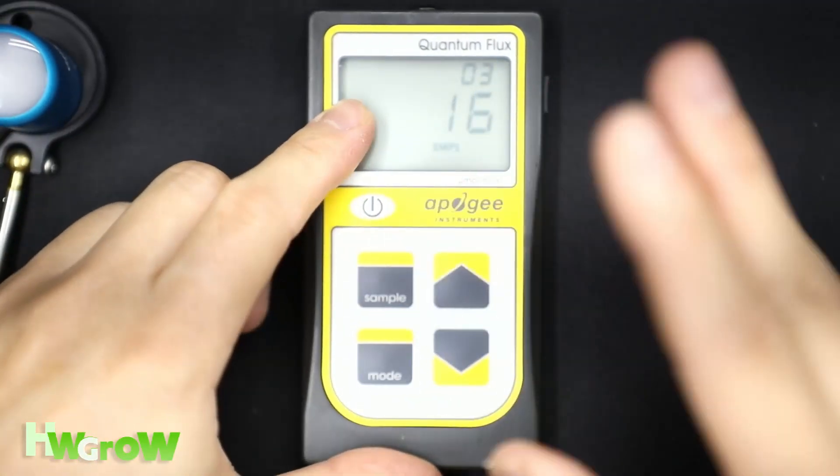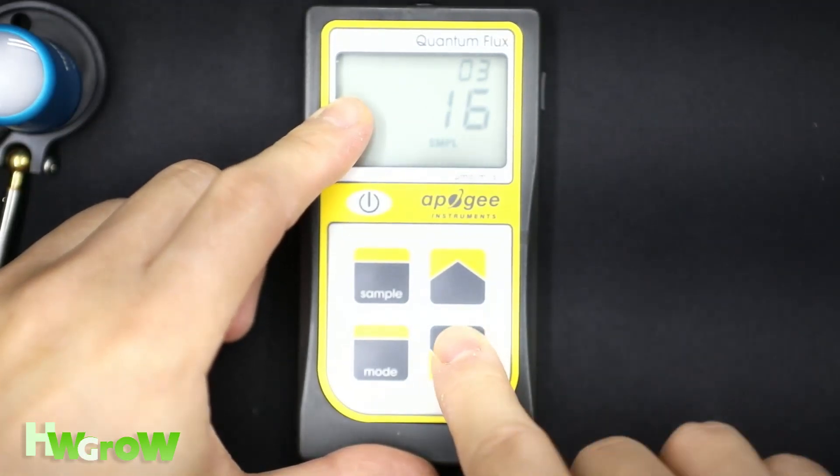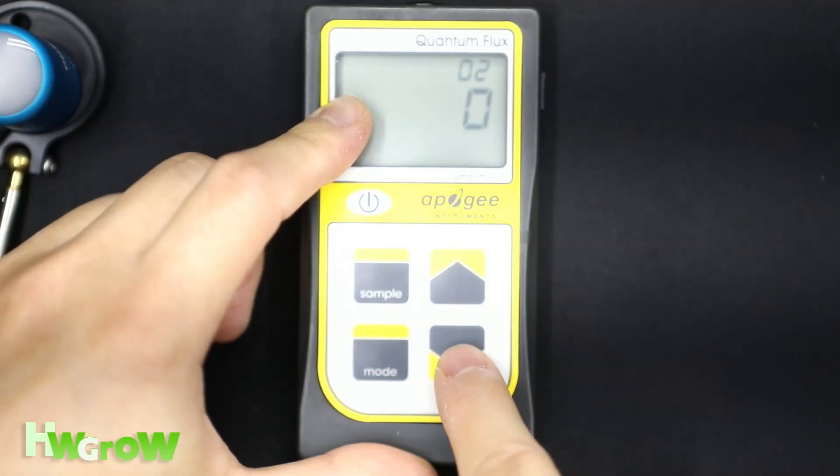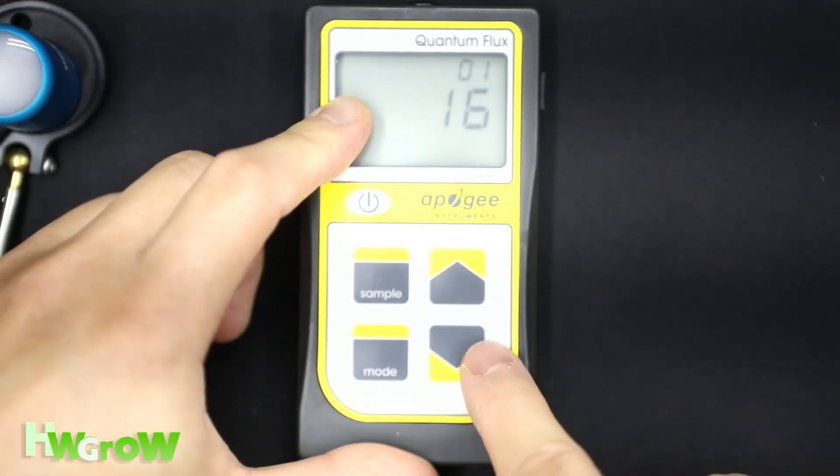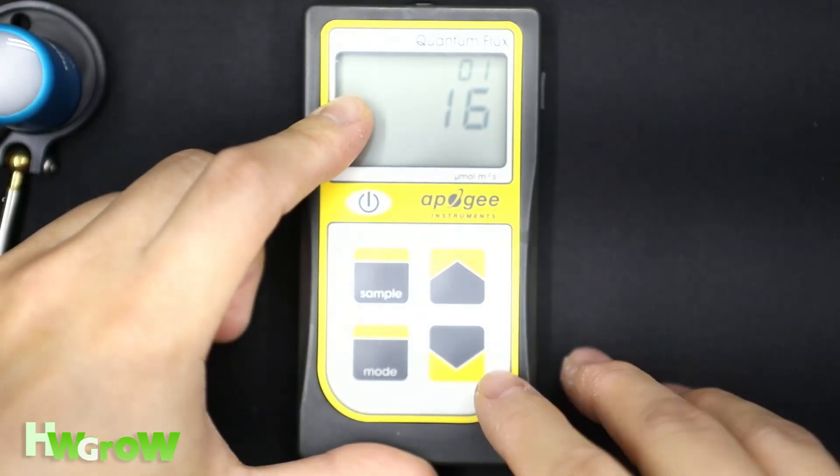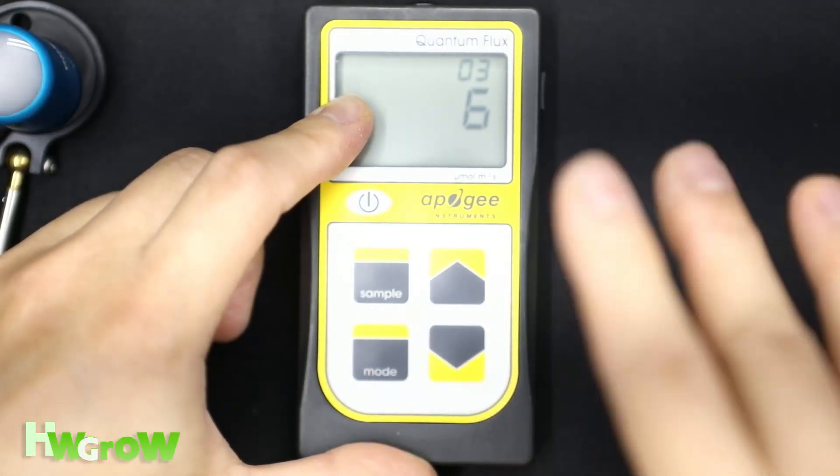And then to see previous readings, all you have to do is push down. So number three slot is six, number two is zero, number one is 16. And then when you press down again, it's going to bring you to number three again, whichever was the last reading.